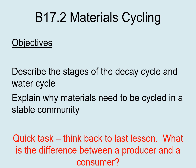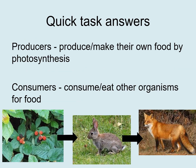The first thing I want you to do is a quick task. Think back to last lesson: what is the difference between a producer and a consumer? Pause the video here, write down the title, date and objectives, and complete the quick task. Here are the answers: producers produce or make their own food by photosynthesis, and consumers consume or eat other organisms for food.